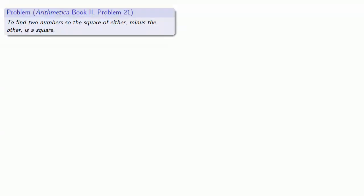Let's take a look at a few more problems of Diophantus, the Arithmetica Book 2, Problem 21: to find two numbers so the square of either minus the other is a square.